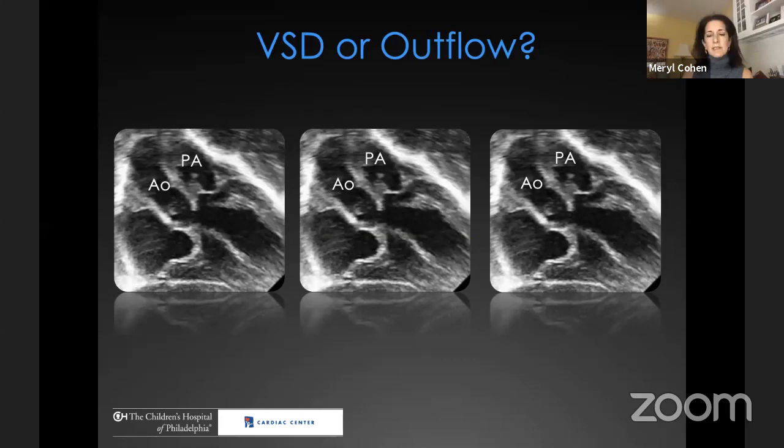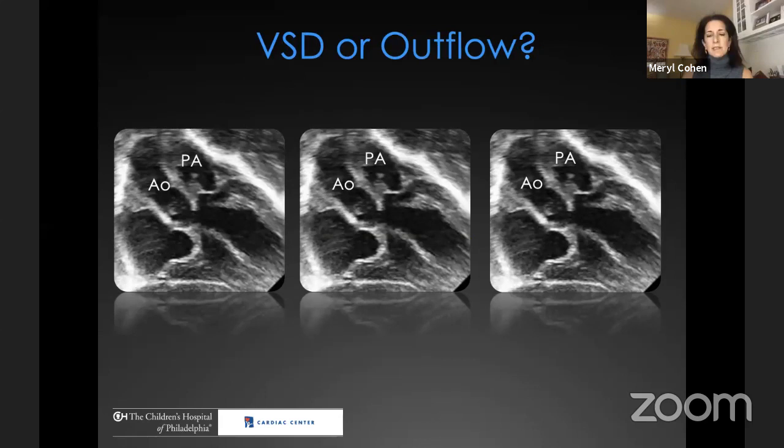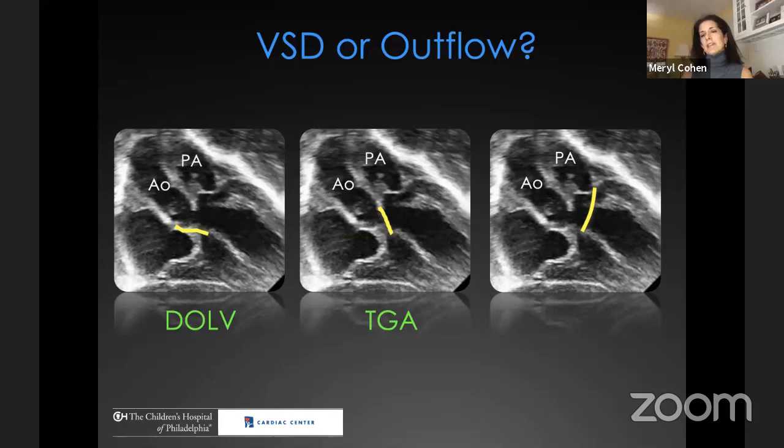To illustrate the arbitrary VSD line: depending on where you draw the VSD in a frozen image, you could call the same anatomy double outlet left ventricle, transposition, or double outlet right ventricle. This highlights that VSDs and outflow tracts can be arbitrarily drawn, and one image cannot help make that diagnosis.